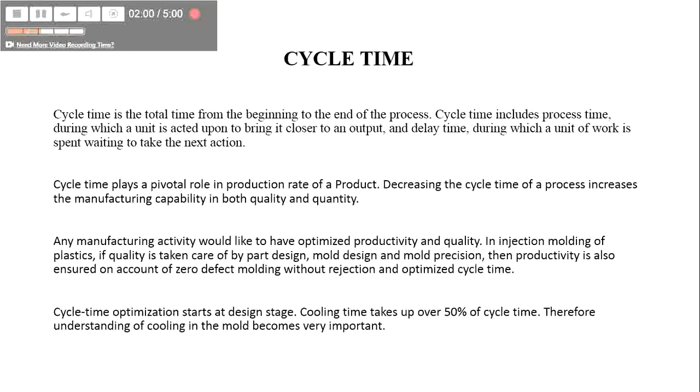Cycle time refers to the time from the beginning to the end of the process. Cycle time includes process time during which various units are acted upon. It plays a pivotal role in production rate of a product.